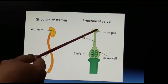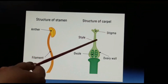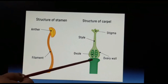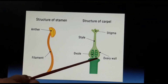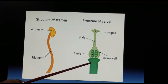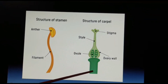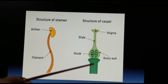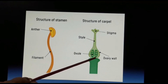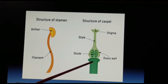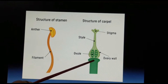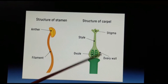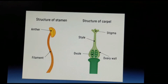In the carpel you can see the stigma, long tube, style, and then the ovule. This ovary is resting on the stalk of the flower. The cup-shaped structure where the ovary rests is said to be the thalamus.